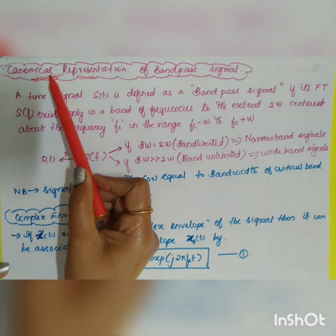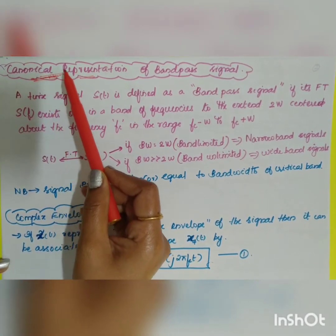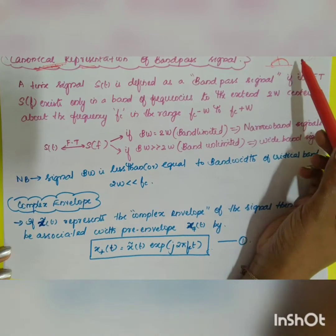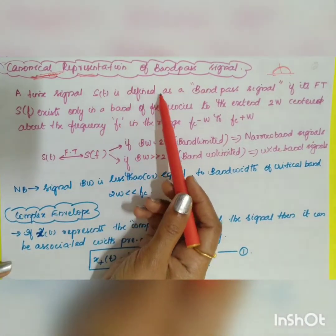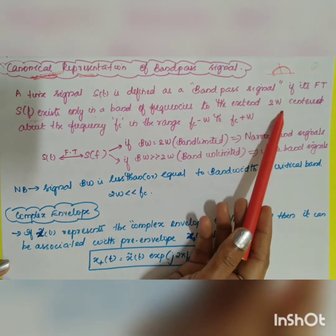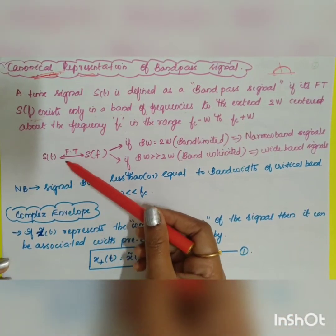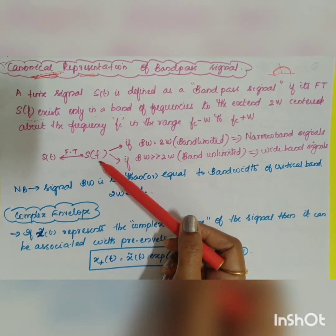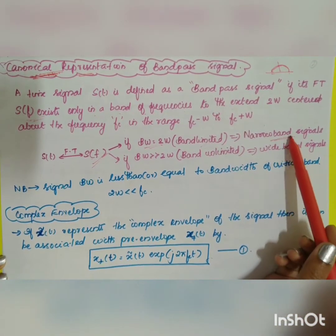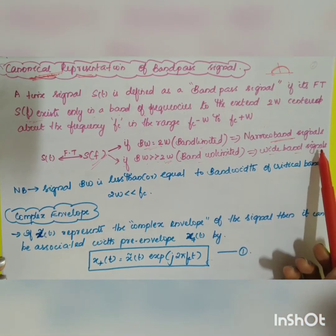Canonical representation denotes the standard form or unique representation of a signal. A time signal s(t) is defined as a bandpass signal if its Fourier transform S(f) exists only in a band of frequencies of extent 2W centered about frequency fc, in the range fc − W to fc + W. When bandwidth equals 2W, the signal is band-limited and called a narrowband signal.